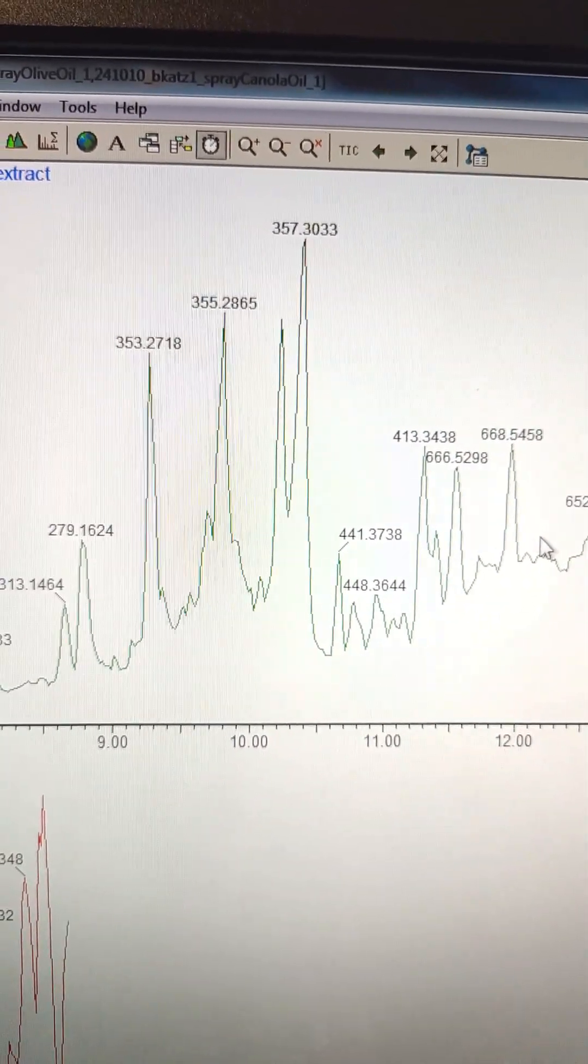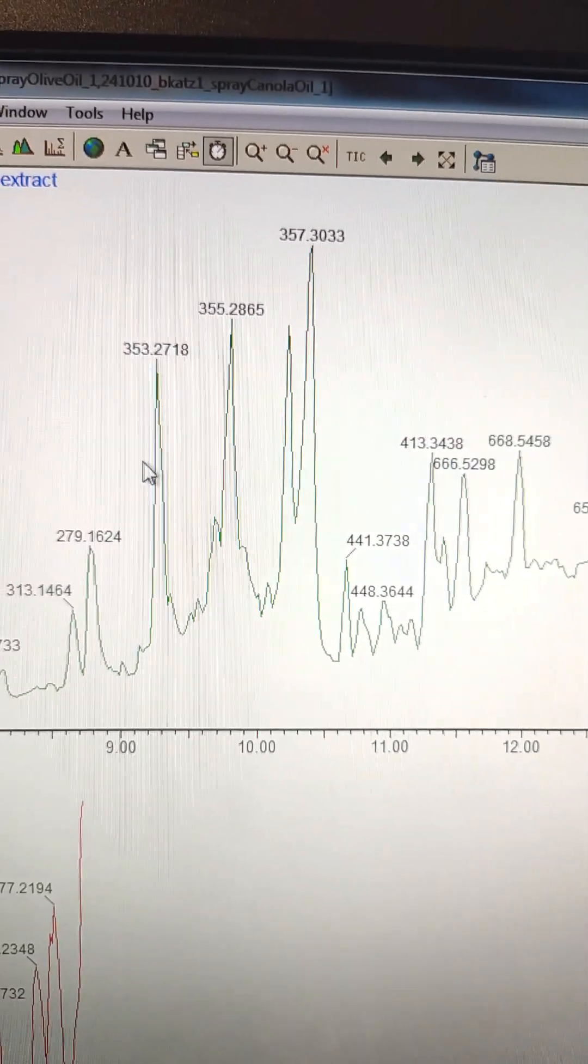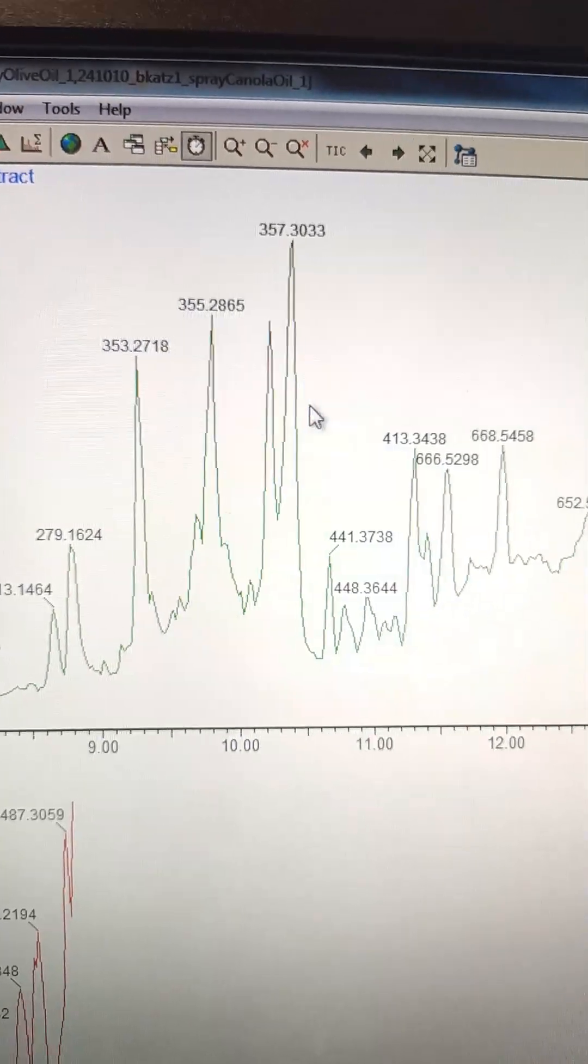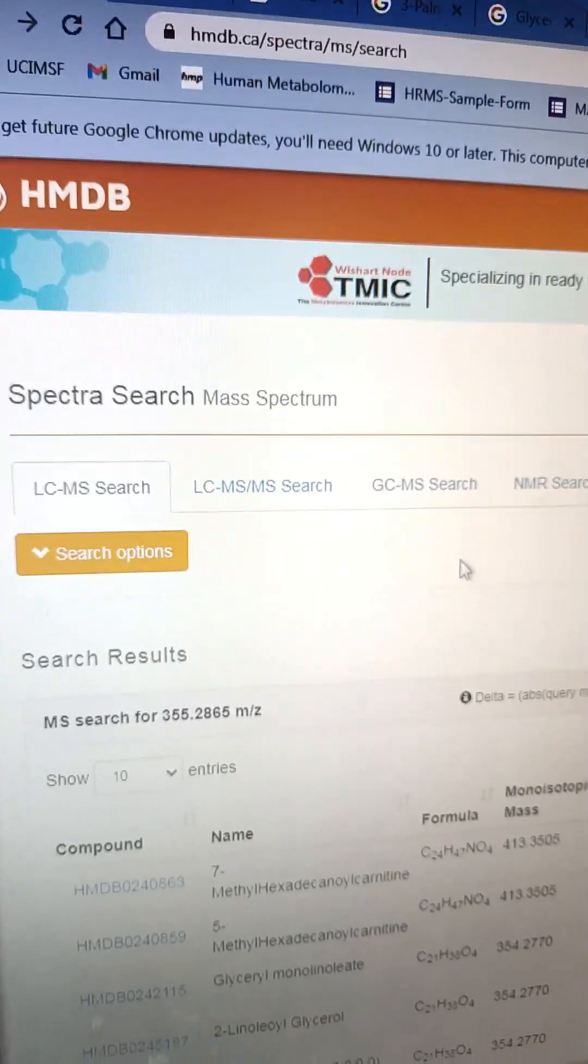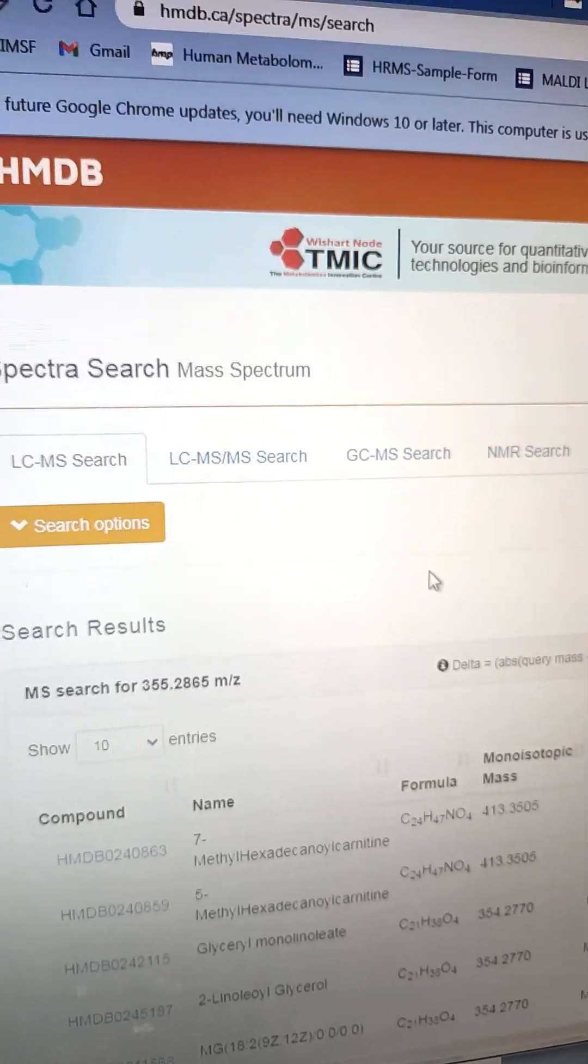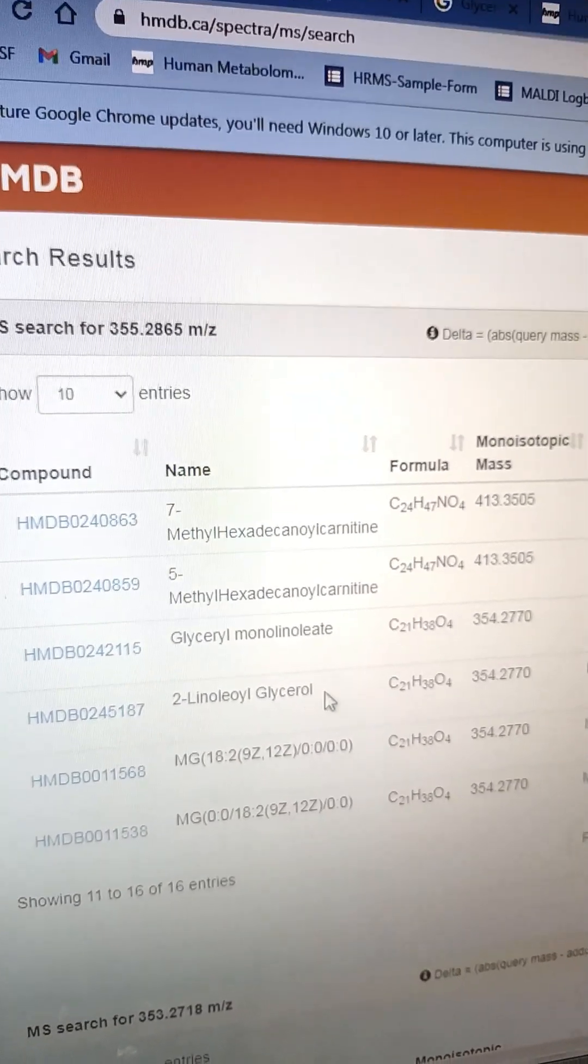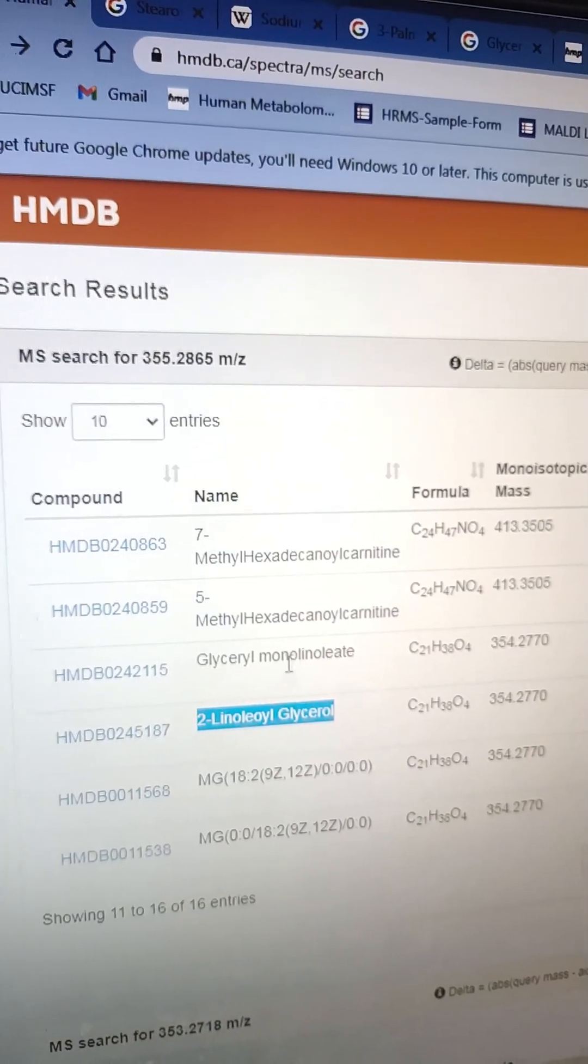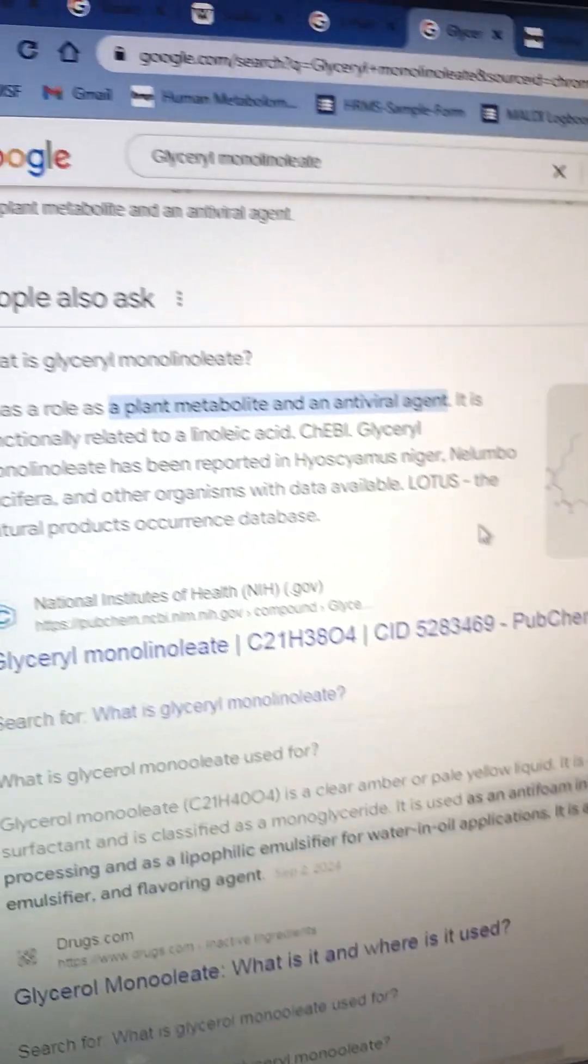It's an FDA-approved food additive. So we are looking for this guy particularly. Here's some of the canola oil data on top. I'm not going to search through everything. Maybe I will send through untargeted and get a big list. Let's look at this 353 and this 355 and this 357. And then we're going to search this in HMDB.